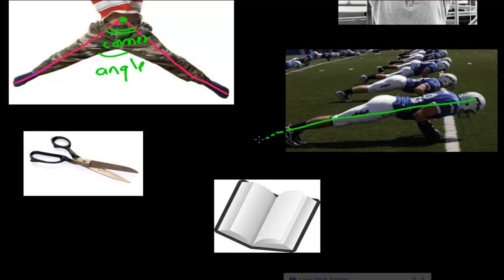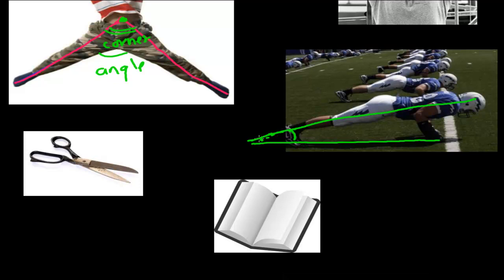Now see here — some soccer players are doing push-ups. Suppose his body is one straight line and the ground is another straight line. Again we are watching the formation of a corner at their intersection, and that corner is exactly the angle.